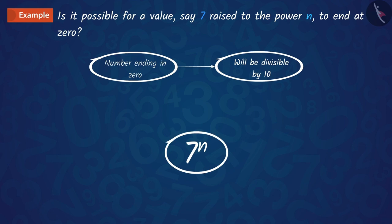Based on this, we can say that there is no natural number which has the power of 7 raised to n whose last digit is 0. Let us look at another example.